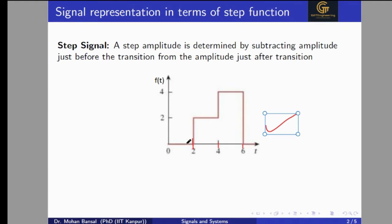Now we will check what is the amplitude just before t=2 — it is 0, and just after t=2 the amplitude is 2. Just after t=4, signal amplitude is 4, and just after t=6, signal amplitude is 0. So we observe that in the signal we have three discontinuities or three transitions, and we identify the amplitude value at each time.